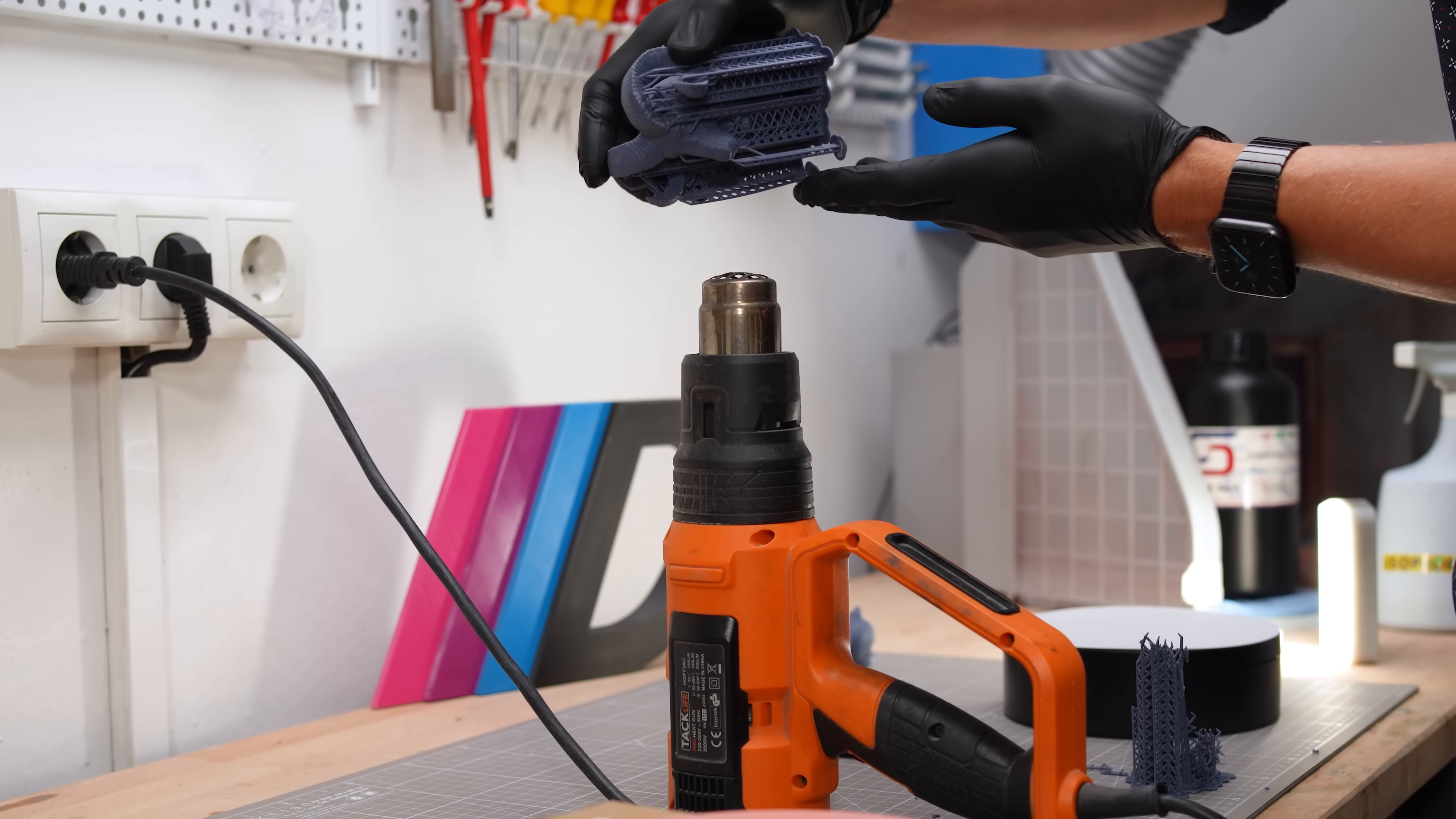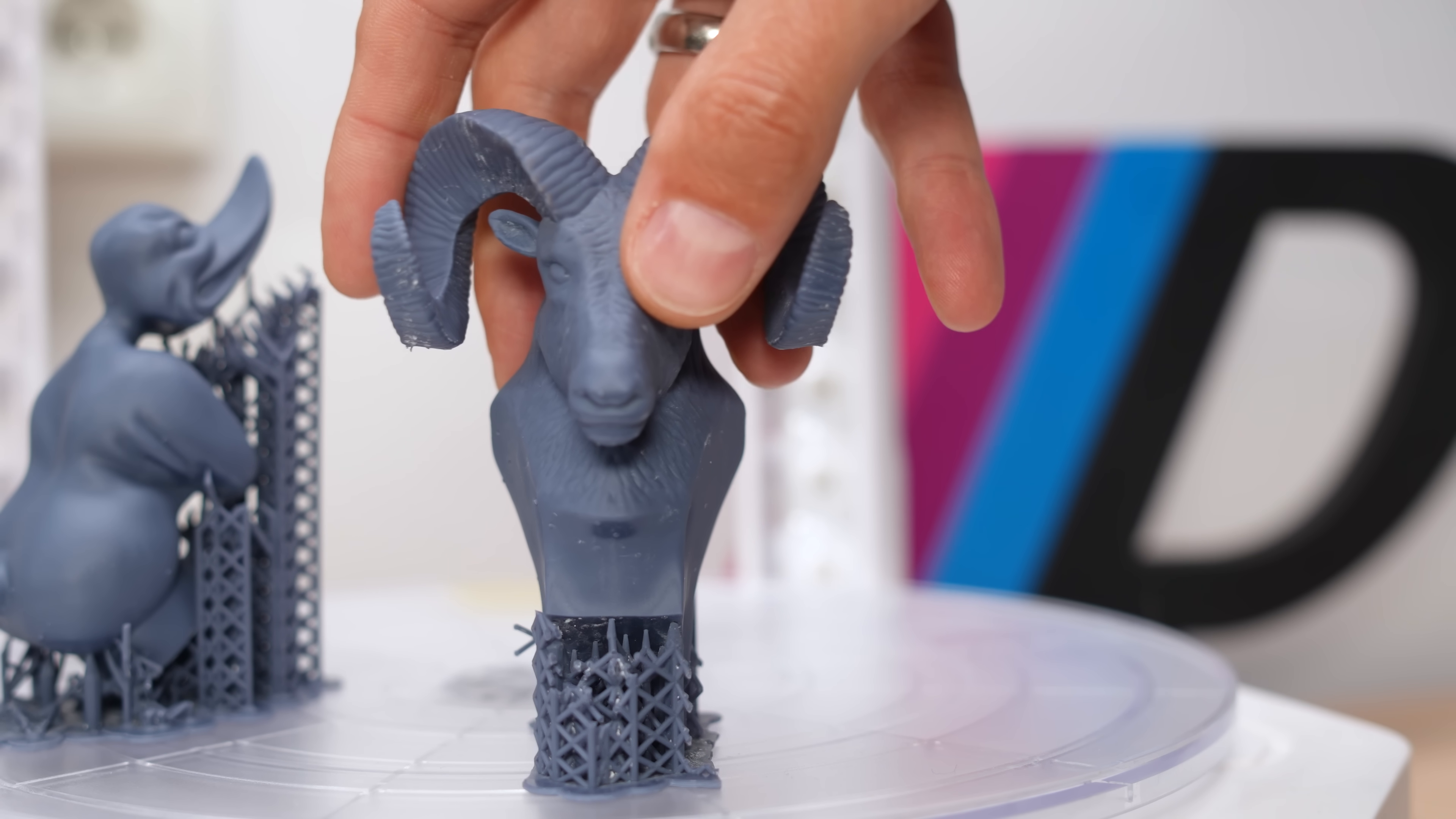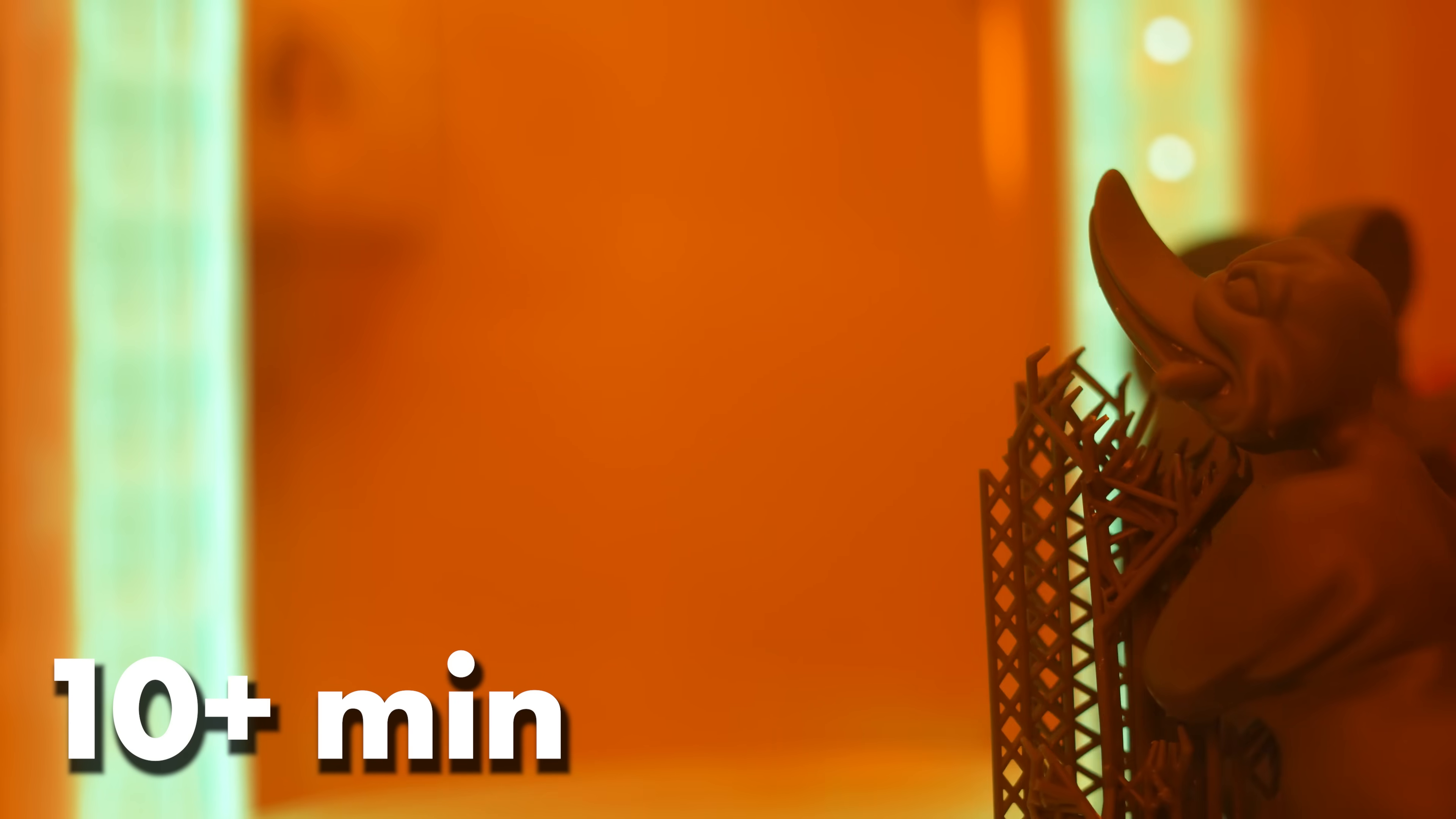Just a quick note on the supports, I like to warm them up with a heat gun before curing. That way they come off pretty easily, just be careful not to overheat. Once the supports are gone, you can cure the print. For electroplating the rule is, the longer it's cured, the better. I usually keep my 3D prints in the UV chamber for about 10 minutes on each side.